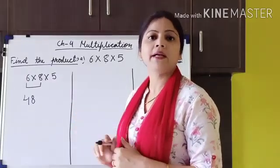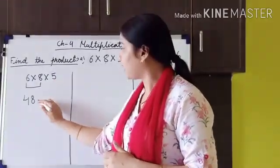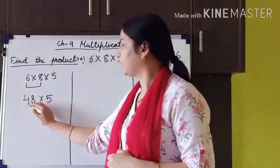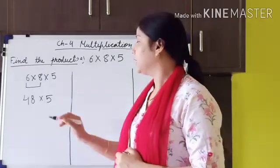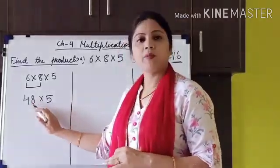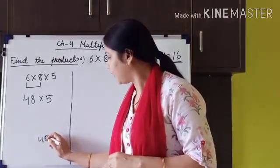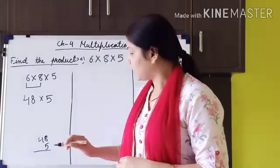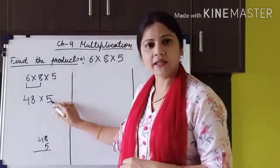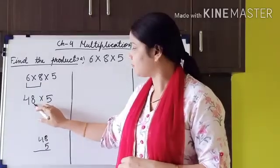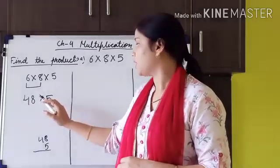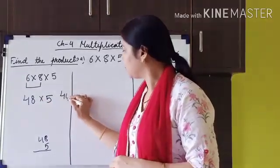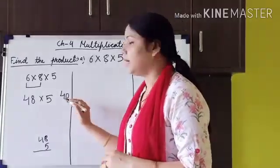This third factor also has to be multiplied, so now we multiply 48 by 5. We put 48 multiplied by 5. In 48: 8 is at the 1's position and 4 is at the 10's position. First we multiply the 1's position: 5 eights are 40. From 40 we write only 0 at the 1's position.